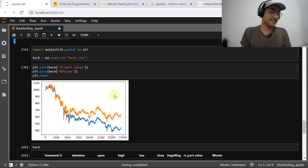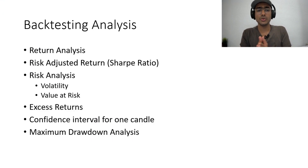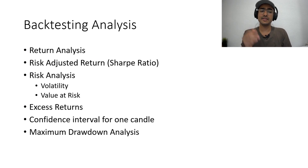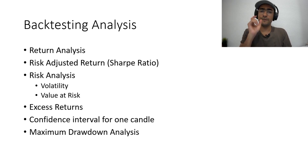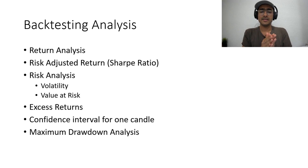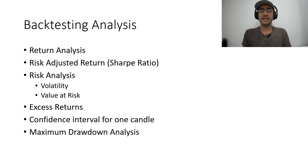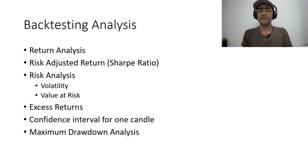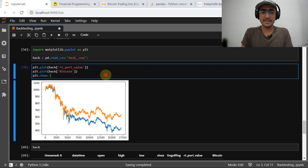Before concluding that our strategy sucked, I'll have to go through a lot of analysis. We'll talk about return analysis, Sharpe ratio analysis — which represents risk-adjusted return — then risk analysis including volatility and value at risk. We'll look at excess returns, then make a confidence interval for one candle to know the possible range with 95.5% confidence. I'll cover maximum drawdown in another video and there will be homework for you on that as well.